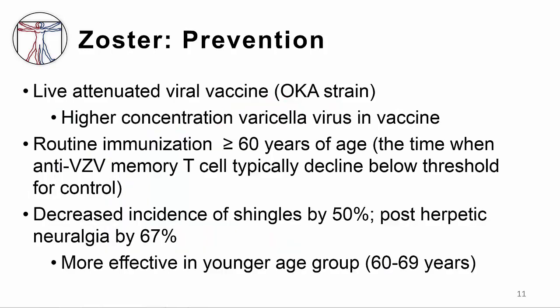The vaccine for zoster is also the Oka strain, but given at a higher concentration than the varicella vaccine and is recommended for everyone over 60 years of age, which is when we see anti-VZV memory declining below the threshold for control. In a clinical trial involving more than 38,000 adults 60 years of age or older, the vaccine reduced the overall incidence of shingles by 51 percent and the incidence of post-herpetic neuralgia by 67 percent. The efficacy was higher in the younger age group, those 60 to 69 years, with a vaccine efficacy of 64 percent, than in the older age group, people older than 70 years, with a vaccine efficacy of 38 percent. This difference is due to the poor T cell response to the vaccine in the older patients.